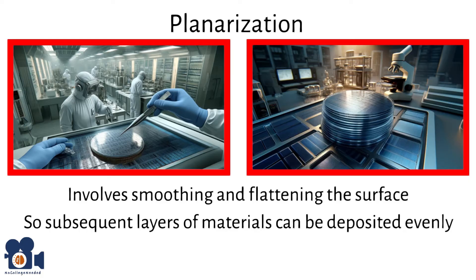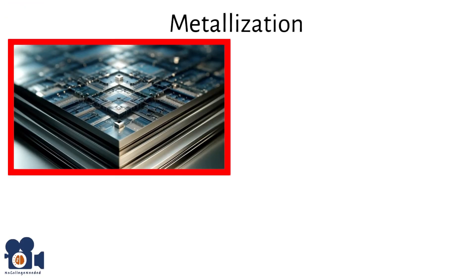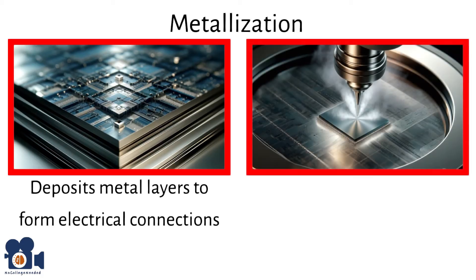Once planarization is complete, metallization begins. Metallization deposits metal layers to form electrical connections. Techniques like CVD, PVD, and electroplating are used to deposit metals like aluminum or copper. Furthermore, photolithography and etching pattern these metal layers to create circuit connections.